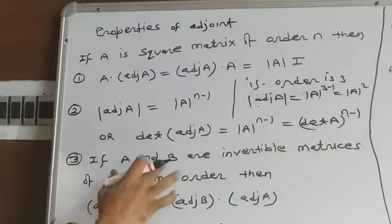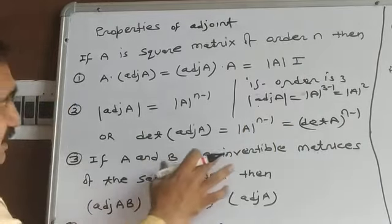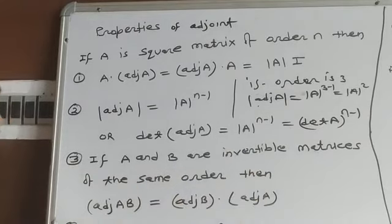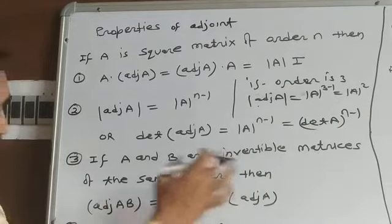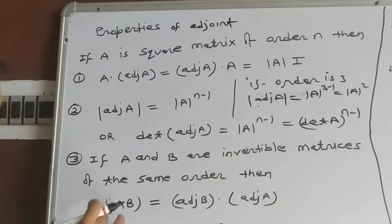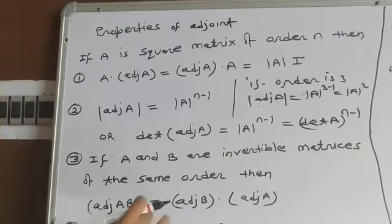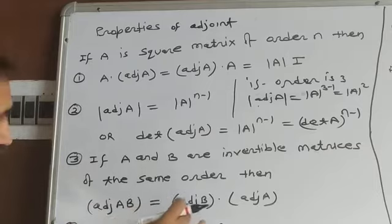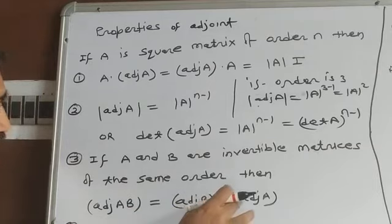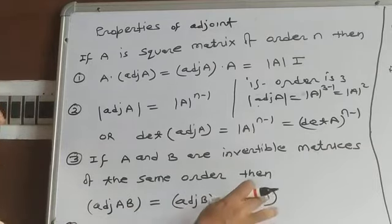Third property: if A and B are invertible matrices of the same order, then Adjoint of AB equals Adjoint B into Adjoint A.